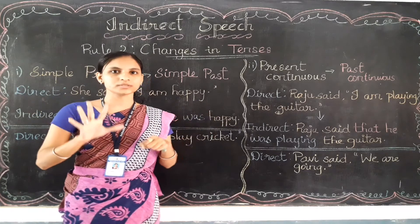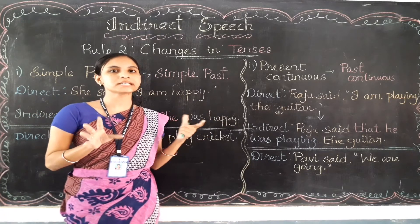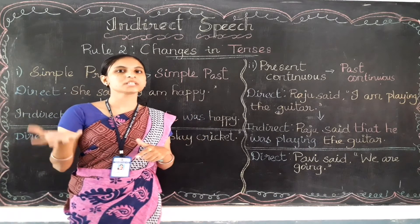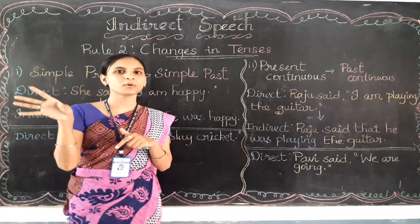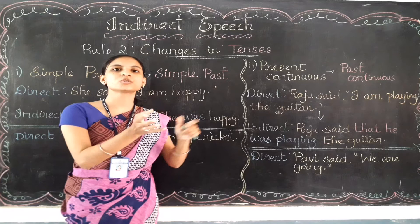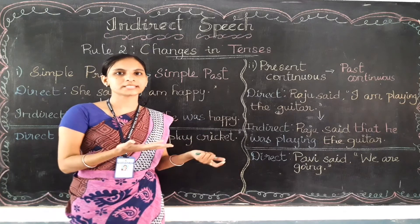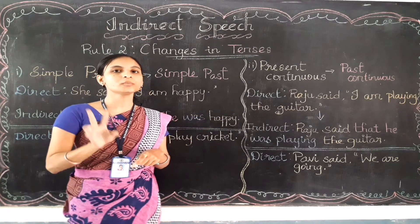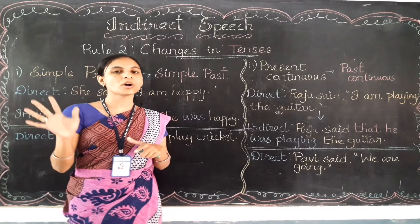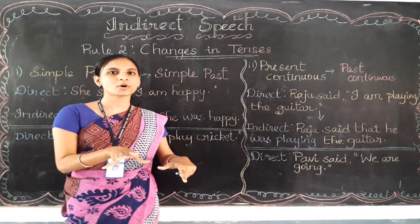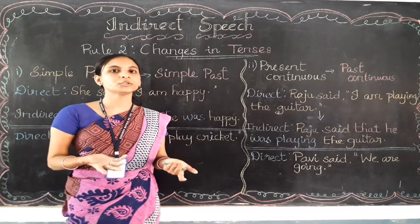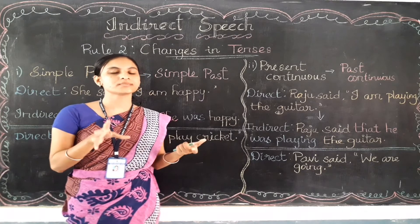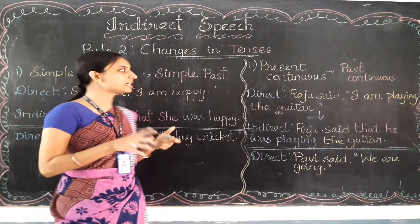There are five rules to change the tenses in indirect speech. In the direct speech, if the reported speech comes with a certain type of tense, it should be converted into a corresponding tense. In this video you are going to learn the first two tenses. What if the reported speech comes with a particular type of tense? What changes will happen to the verbs in the indirect speech? Let's learn one by one.